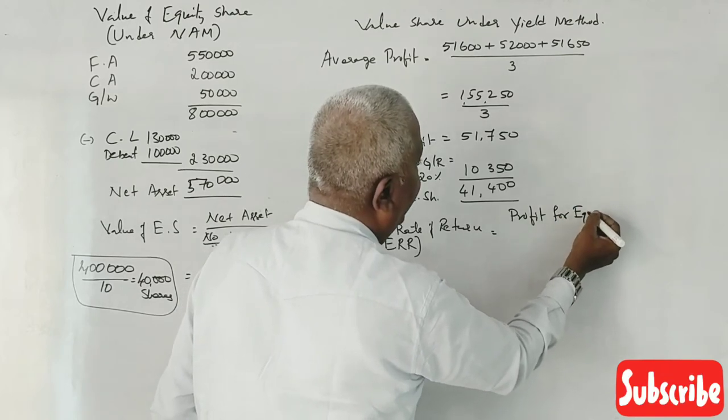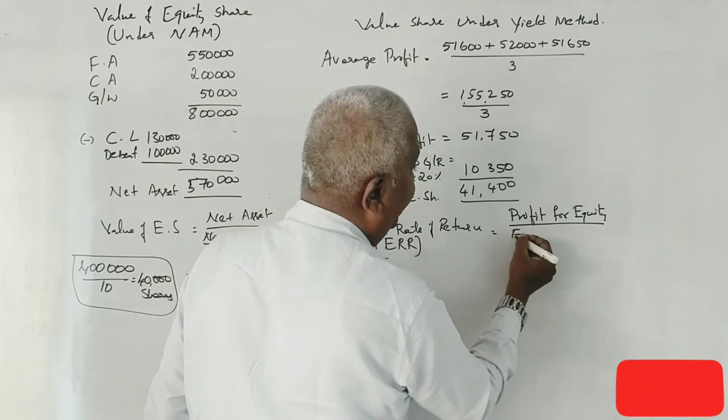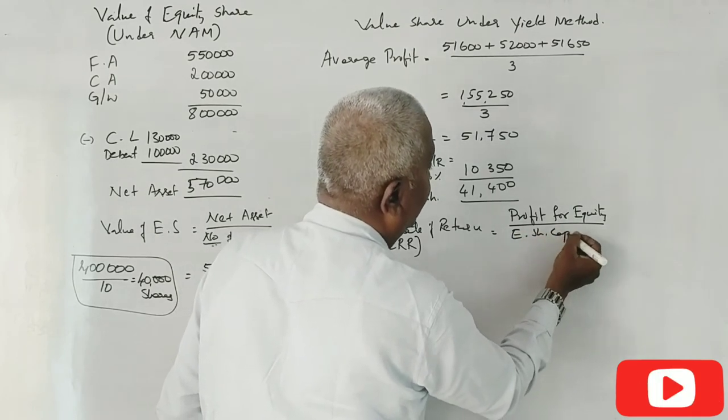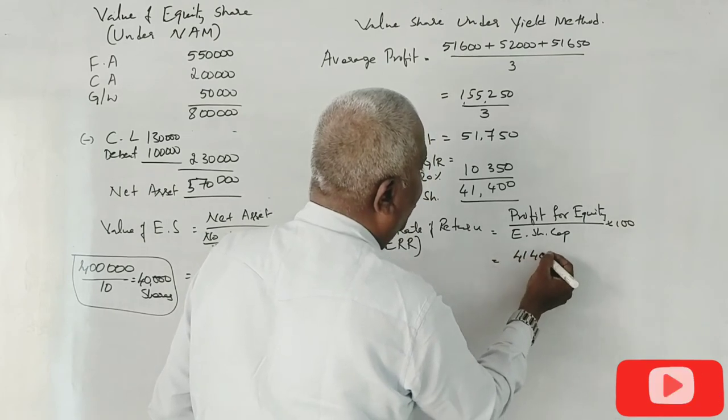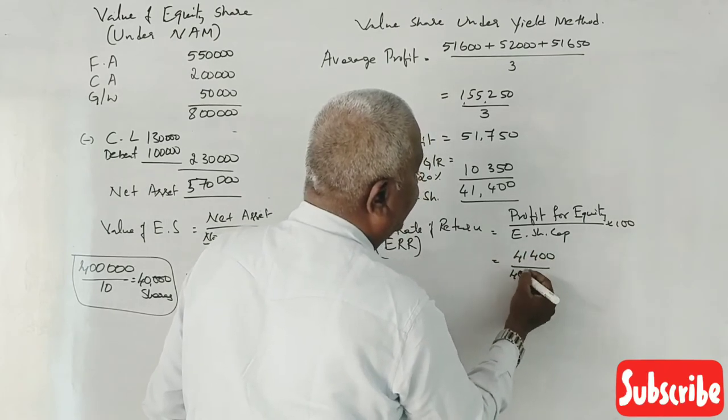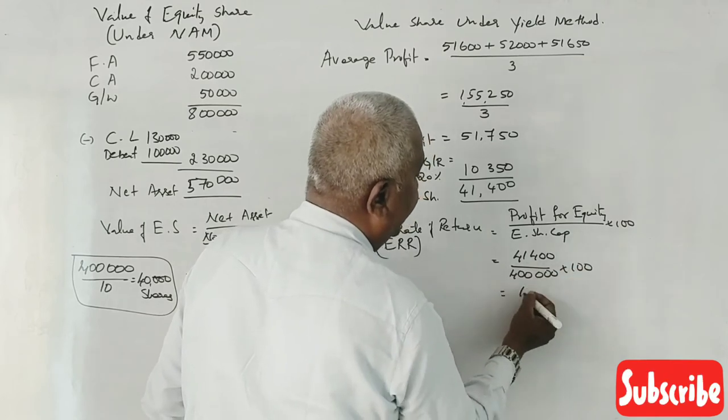Into 100. 41,400 divided by equity capital 4 lakhs, into 100.